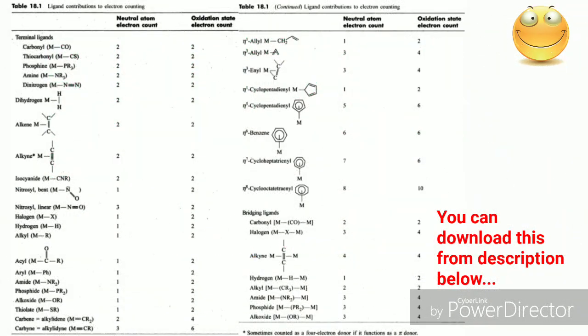You can see the table on the screen. You can also download it as a PDF from the description below. This table gives you the data about the electrons donated by ligands in both neutral atom method and oxidation state method to form complexes.